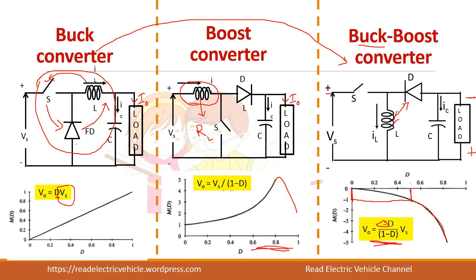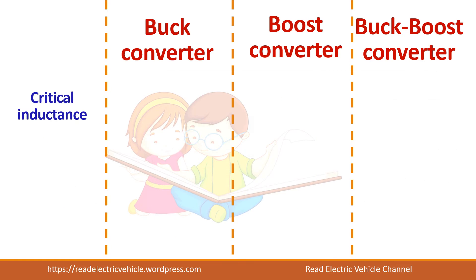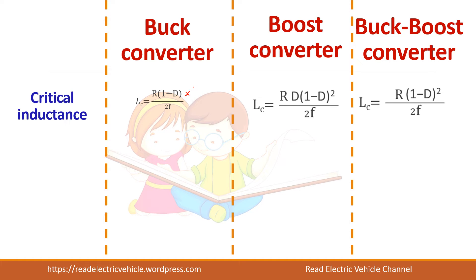This circuit is used where you want to perform both step-up and step-down operation. The critical inductance formulas have already been derived in the respective videos. For the buck converter it is R times (1 minus D) divided by 2F. For the buck-boost converter you multiply by (1 minus D), and for the boost converter you additionally multiply by D.